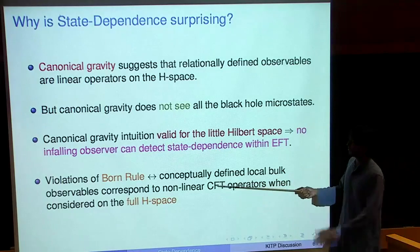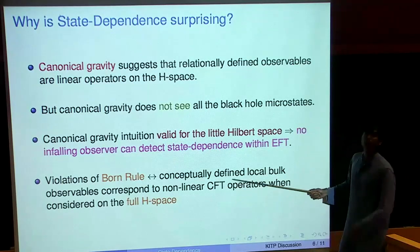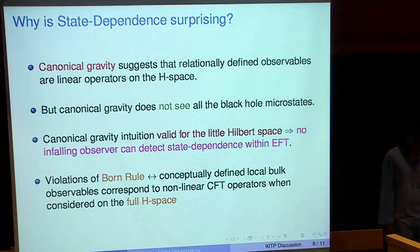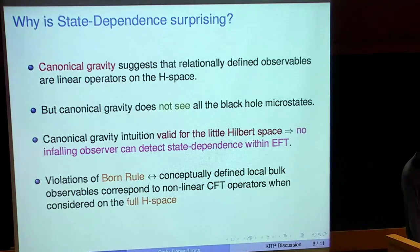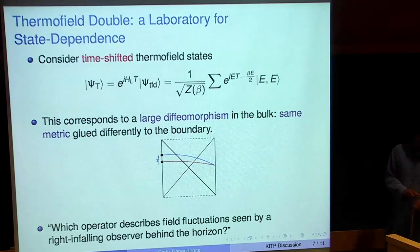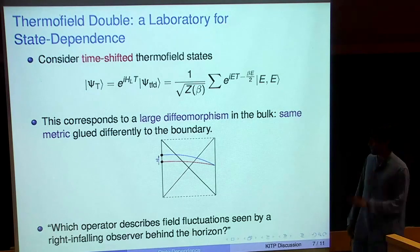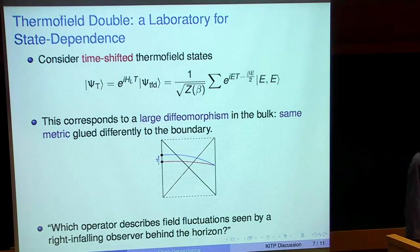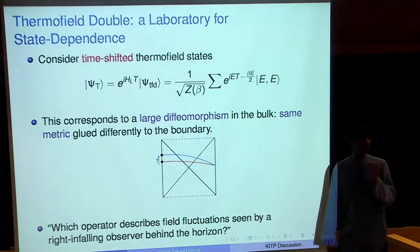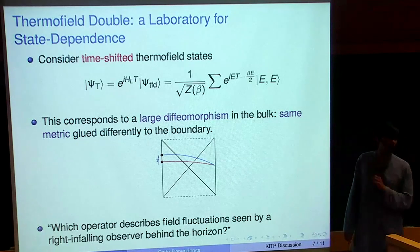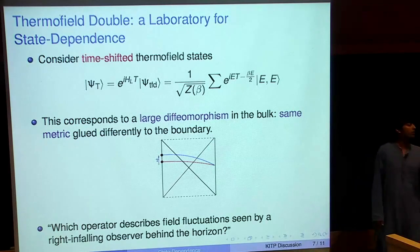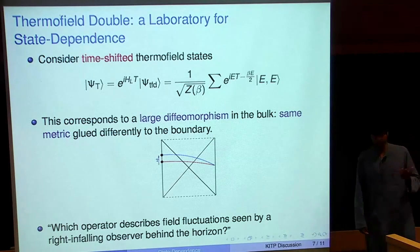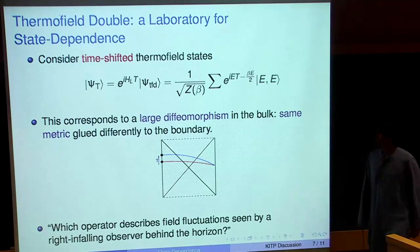The thermofield double is an excellent laboratory for studying state dependence — a setting where you can examine this intuition very well. You can frame these paradoxes extremely sharply and also have intuition as to what the results should be. Consider the thermofield double state — entangled energy eigenstates summed over all energy eigenstates — and deform it by evolving with the left Hamiltonian.